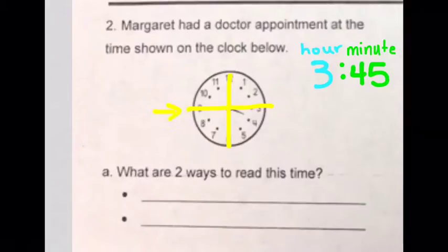Our minute hand stops right here. So we're going to go around three quarters of the clock, which leaves us this one-fourth section, this one quarter, until the next hour.